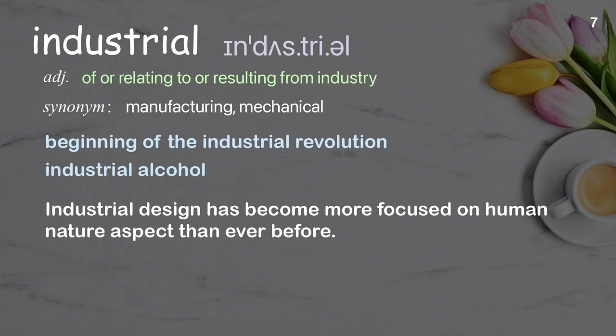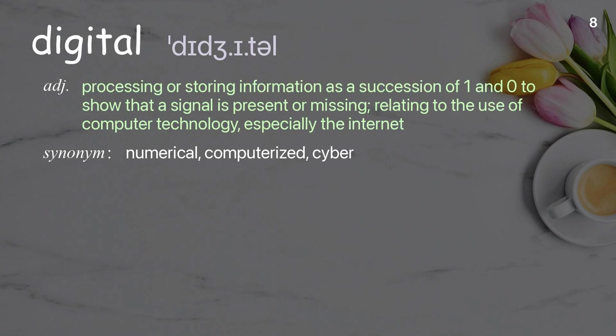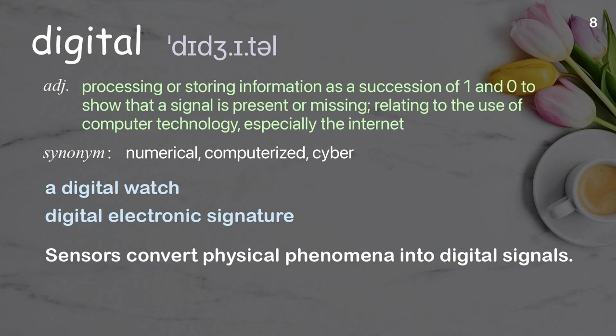Digital: processing or storing information as a succession of ones and zeros to show that a signal is present or missing; relating to the use of computer technology, especially the internet. Examples: a digital watch, digital electronic signature. Sensors convert physical phenomena into digital signals.